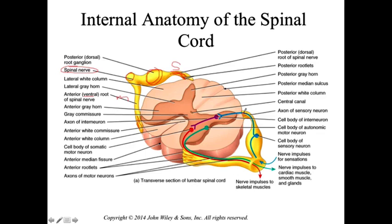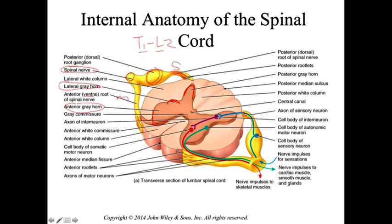Looking at the gray matter butterfly, we have the dorsal horn and the ventral horn — also known as the anterior gray horn — and a lateral horn. When a lateral horn is present, we know it's either a thoracic or upper lumbar section, because the lateral horns contain the sympathetic nervous system, which has a thoracolumbar outflow from T1 to L2. So a visible lateral horn indicates a segment between T1 and L2.